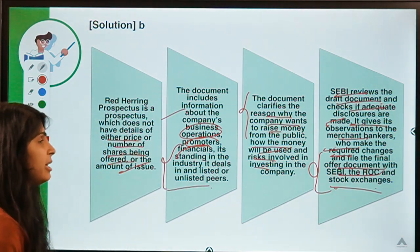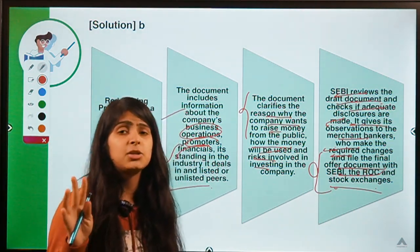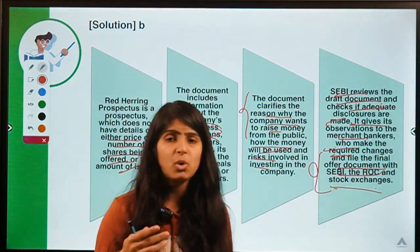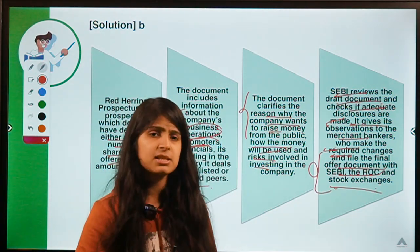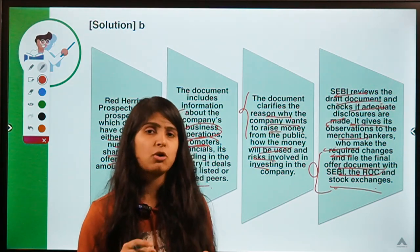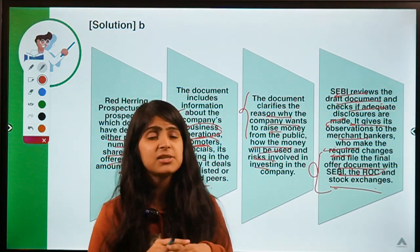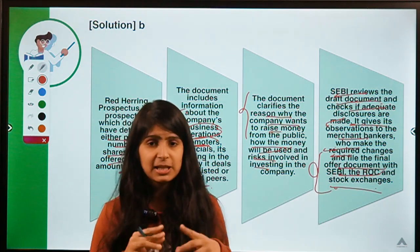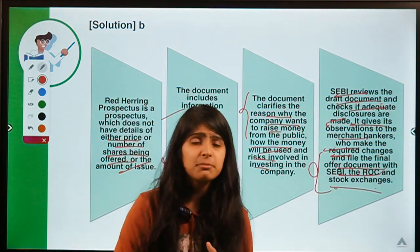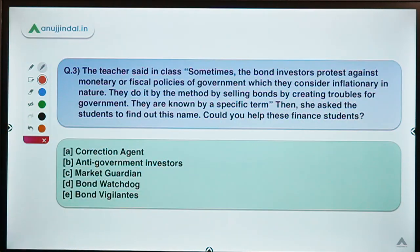After SEBI review, merchant bankers file the final offer document with SEBI, the Registrar of Companies, and the stock exchange. This is about the Red Herring Prospectus. As a question for you: mention in the comments why this preliminary prospectus is called a 'Red Herring' prospectus — what is the story behind that term? I hope to see a lot of comments.